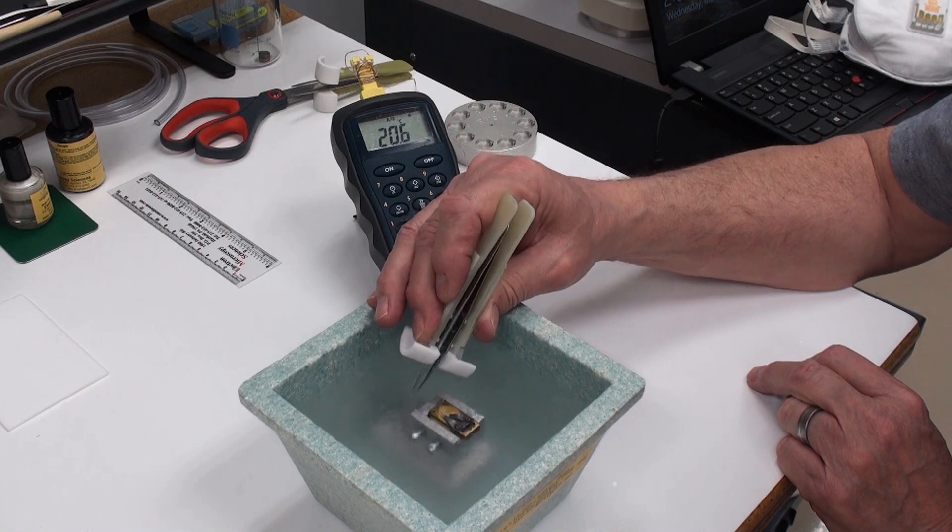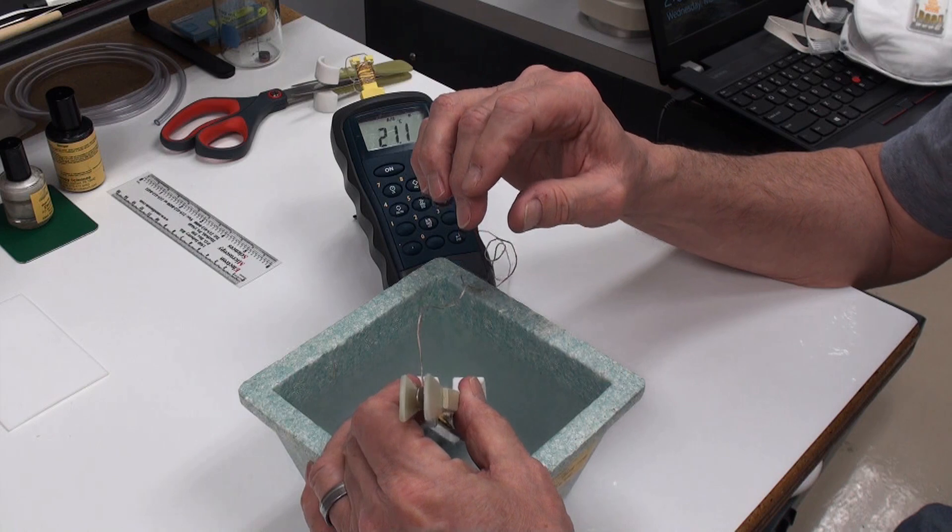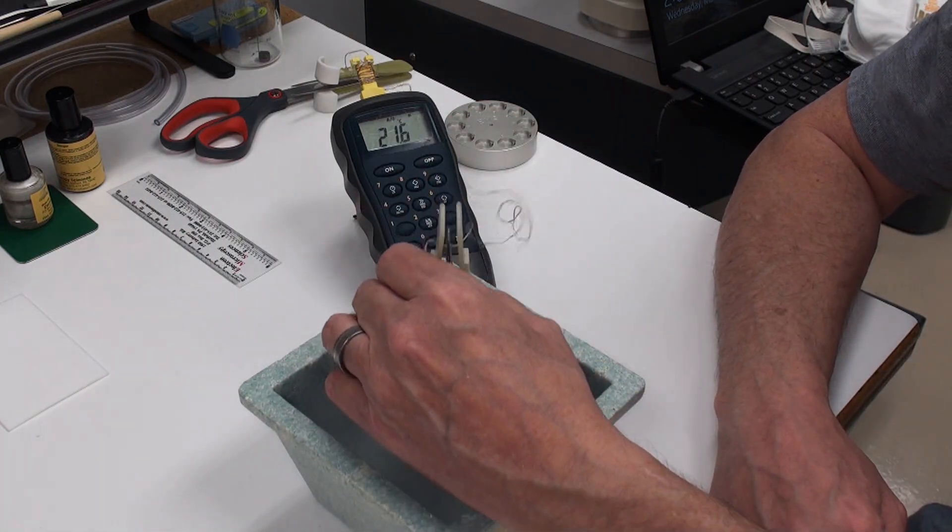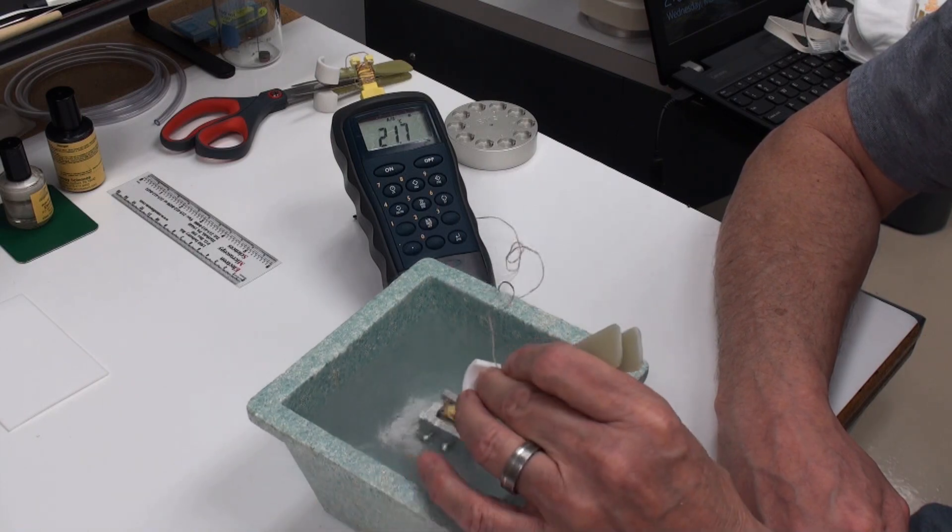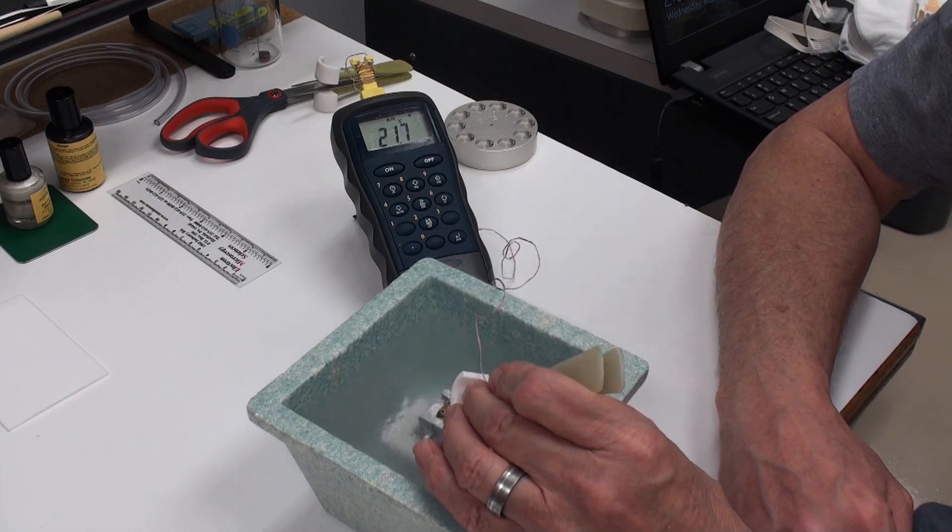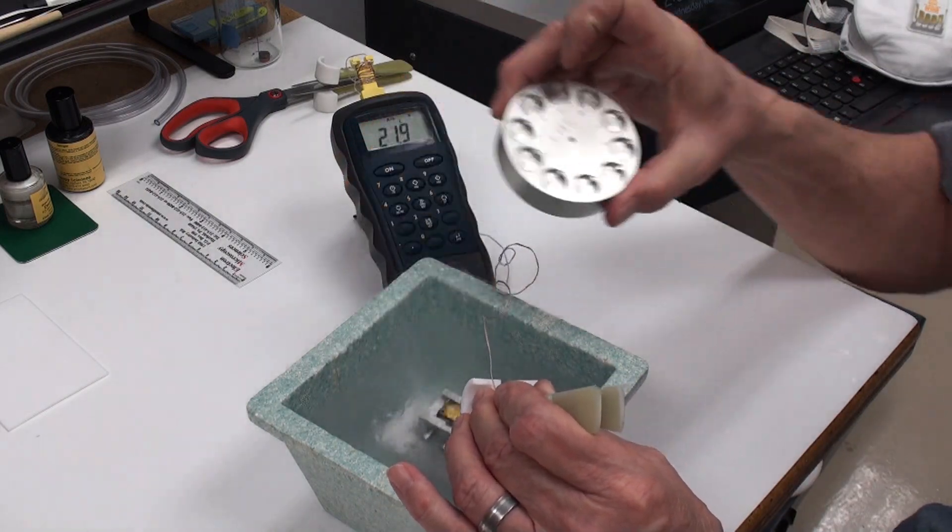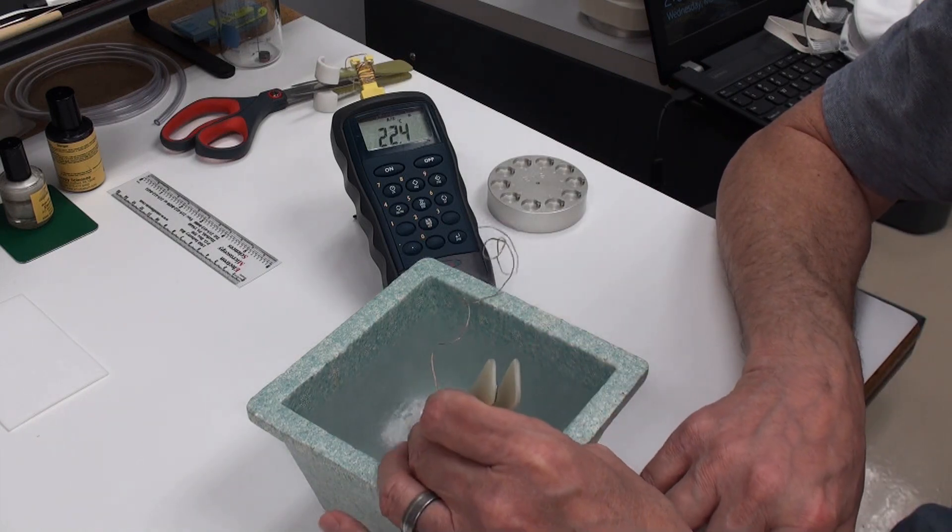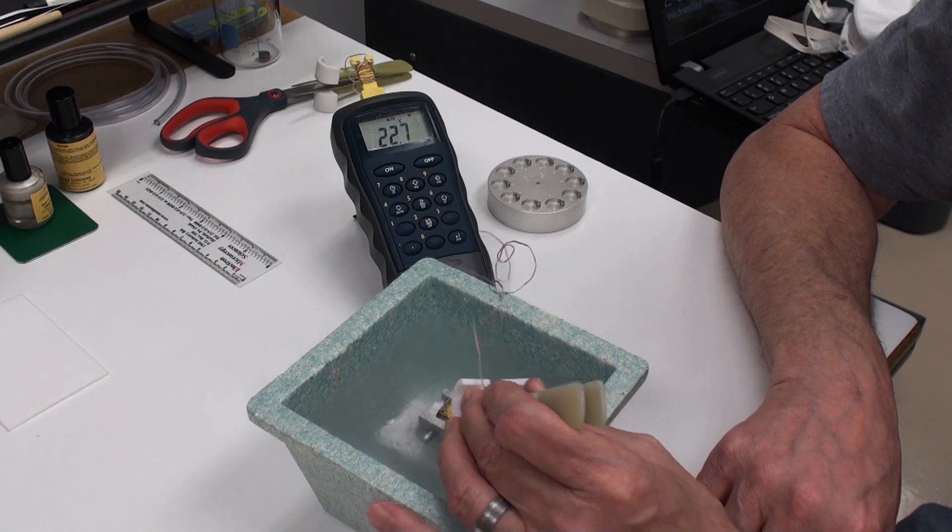So you can work in the nitrogen for quite an extended period of time and of course you can't immerse the whole thing in there. But certainly if you're manipulating grids that are going to go into a cryopuck or one of those capsules and you have a shallow enough dish, this will all work quite well.